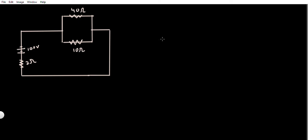Welcome to problem 2 for our circuit playlist. In this video we're given the following circuit: we have a 100 volt battery with an internal resistance of 2 ohms, and we have a 40 ohm resistor and a 10 ohm resistor in series.